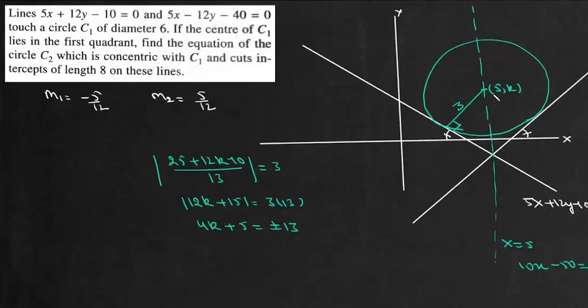Now we need this center in the first quadrant, so we'll take the plus sign. So we'll get 4k equals 8. So value of k is 2. So center of this circle is at 5 comma 2.